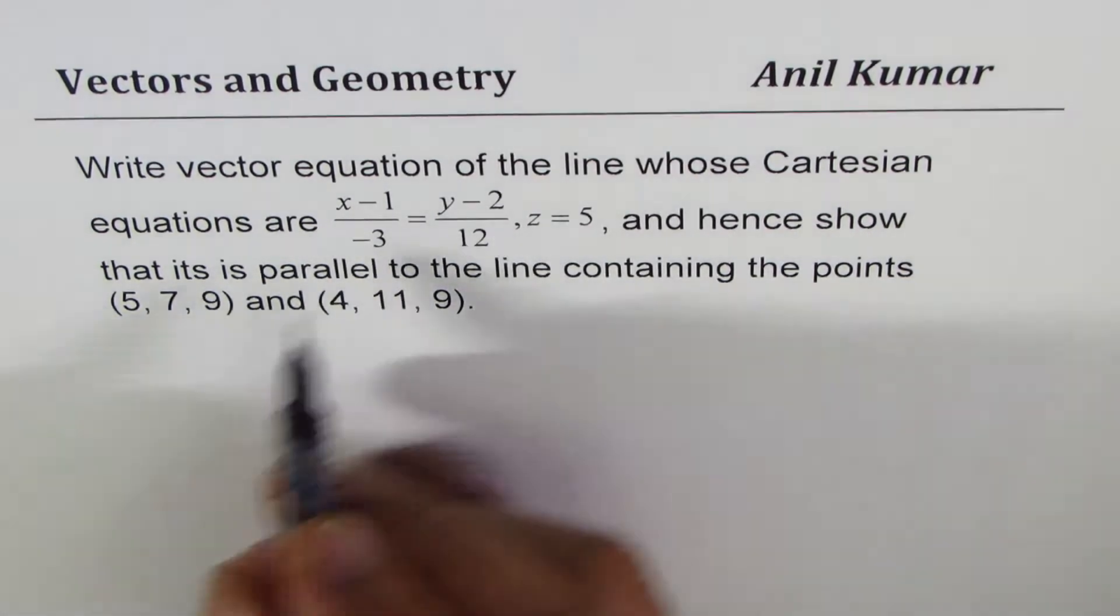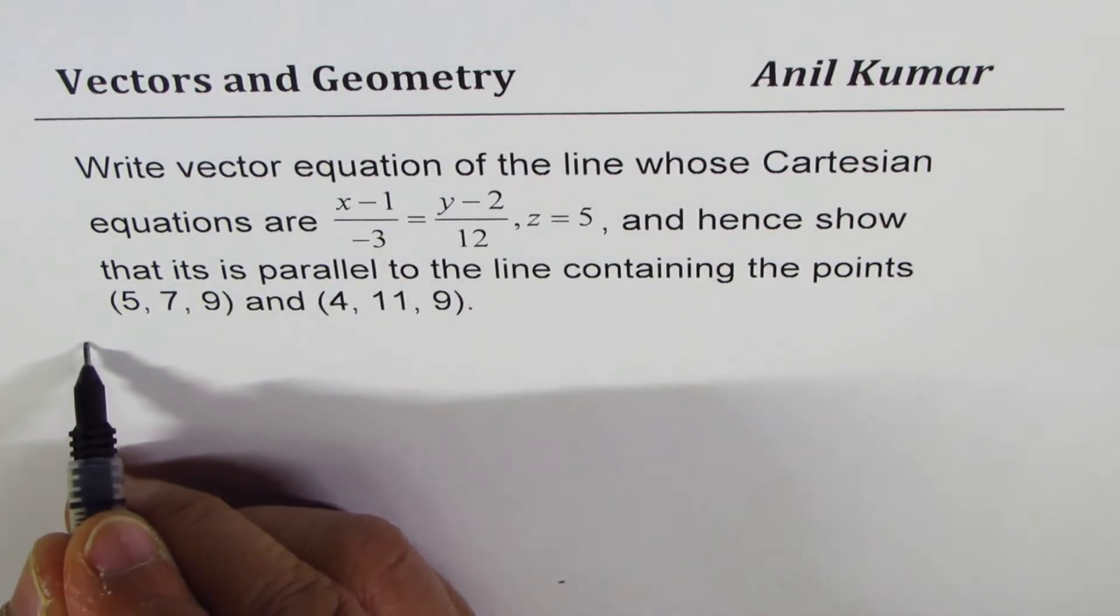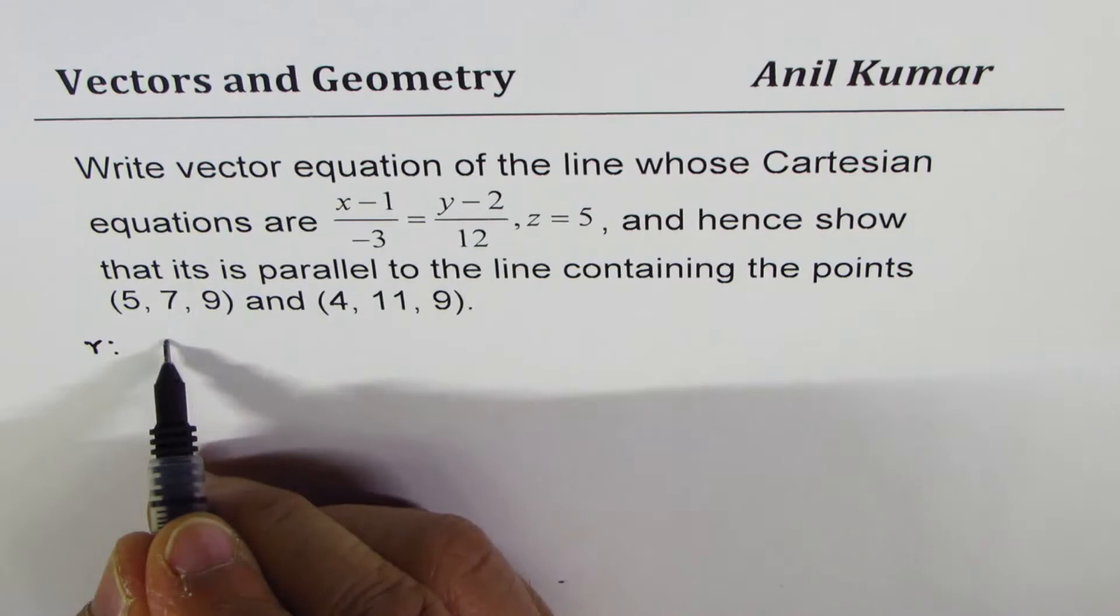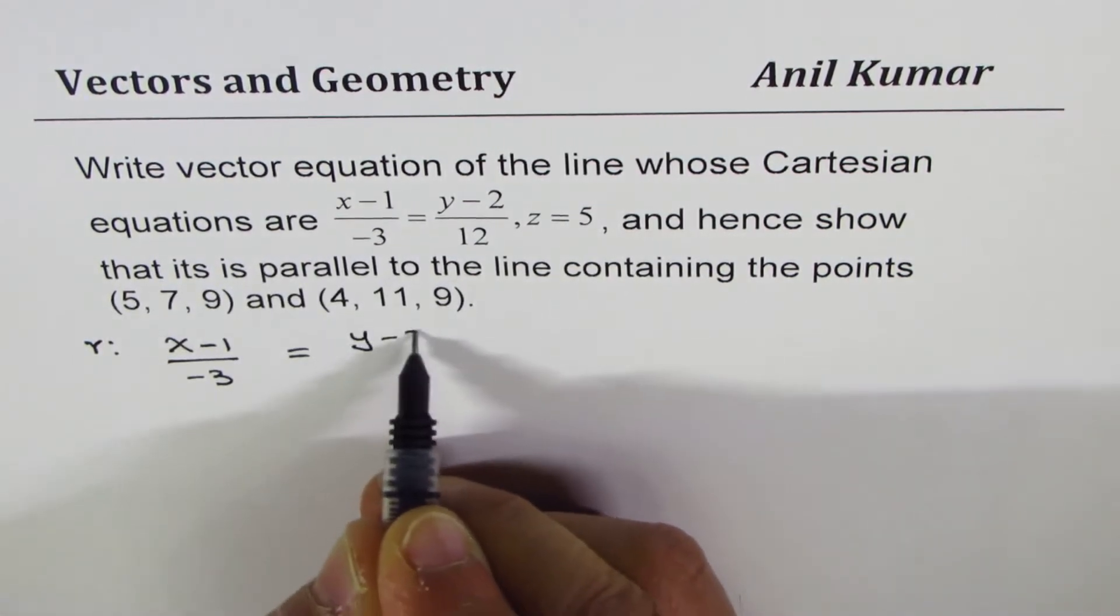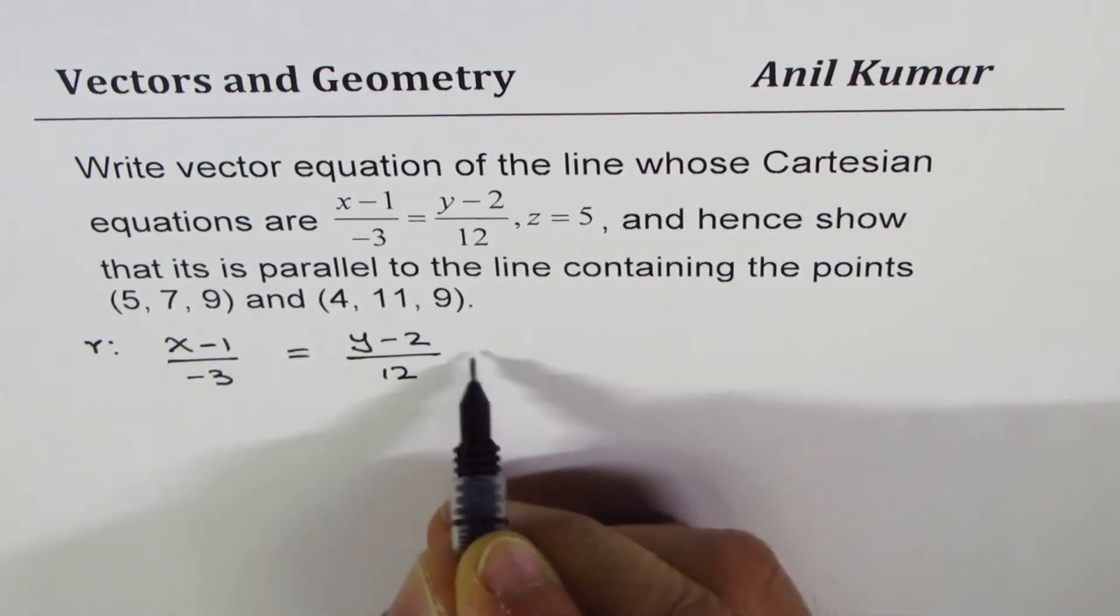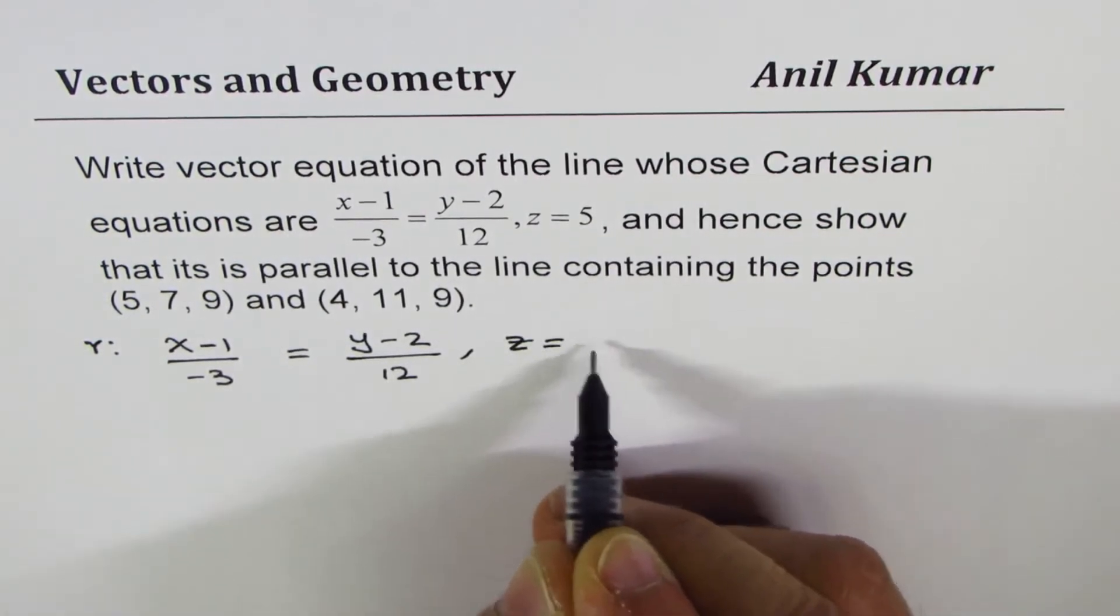Okay, so let's look into the equation of the line given to us, which is x minus 1 over minus 3 equals to y minus 2 over 12 and z equals to 5.